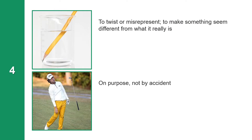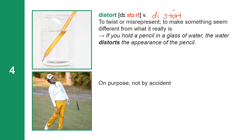The next word means to twist or misrepresent, to make something seem different from what it really is. The word is Distort. Distort is a verb. It has two syllables: D-I-S-T-O-R-T, with stress on the second syllable. If you hold a pencil in a glass of water, the water distorts the appearance of the pencil.